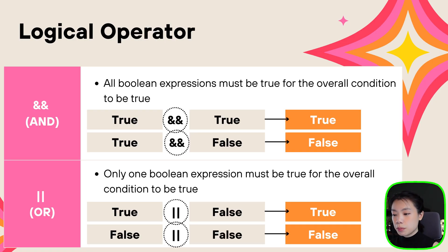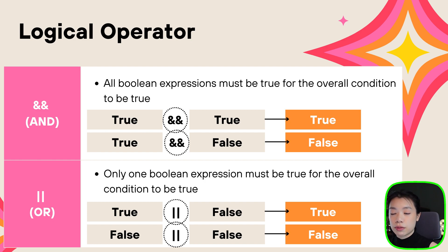In order to do that, we need to use something called a logical operator. There are two logical operators. The first one is AND, and the second one is OR. The symbol for the AND logical operator is two ampersands (&&). All the Boolean expressions within the condition have to result in true for the whole condition to be true. If one Boolean expression is false, then the whole condition is false. But with an OR logical operator, if only one of the Boolean expressions is true, then the whole expression is true. The only case it will be false is when all Boolean expressions are false.